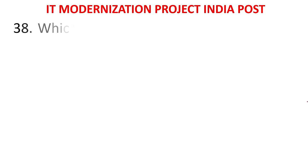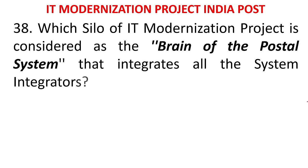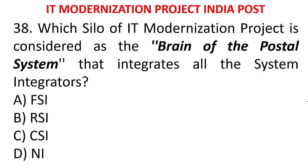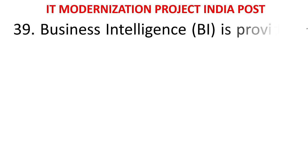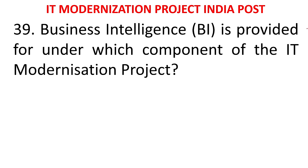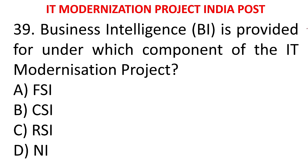MCQ 36: Which silo of the IT modernization project is considered the brain of the postal system that integrates all system integrators? FSI, RSI, CSI, or NI. The answer is CSI. Core system integrator is called the brain of the postal system. MCQ 37: Business intelligence reports are provided under which component of the IT modernization project? FSI, CSI, RSI, or NI. The answer is CSI. In the core system integrator, business intelligence reports give information on article booking across the circle, financial services growth, parcel booking growth, etc.